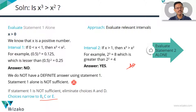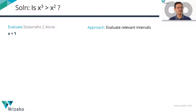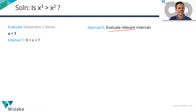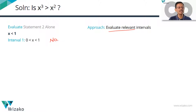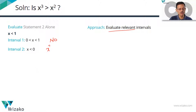Step 2 is to evaluate Statement 2 alone, forgetting we have seen Statement 1. Statement 2 says X is less than 1. We look at relevant intervals. The first interval is X lying between 0 and 1: taking X equal to one-half, X cubed is 1/8 and X squared is 1/4, so X cubed is less than X squared — answer is NO. The second interval is X less than 0, meaning X is negative. The cube of a negative number is negative, and the square of a negative number is positive. Since negative is less than positive, X cubed is less than X squared — answer is NO.